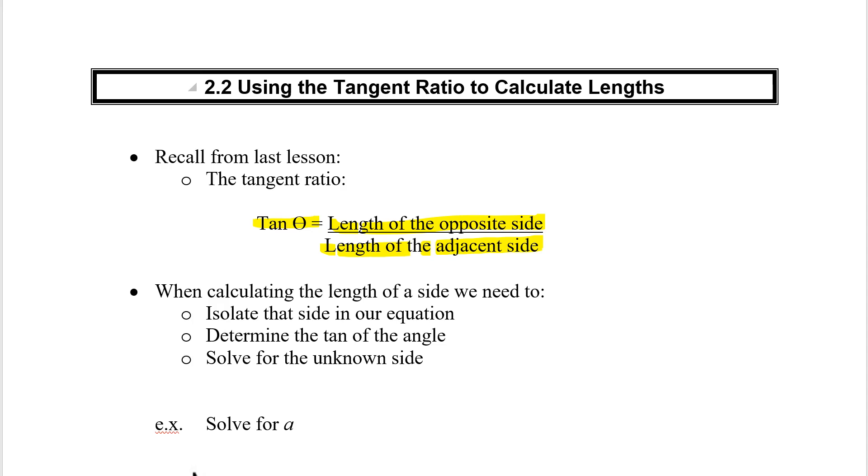When we're calculating our length, what do we need to know? Well, the first thing we have to do is we need to isolate that side in our equation. You can see up here that we've got tan of the angle, and then we've got our two lengths. So when we have to solve for one of these, we isolate it using some algebra. Then we have to figure out the tan of our angle, and I'll show you how to do that using Desmos. And then finally, we're going to solve for the unknown. So let's take a look at what this looks like.